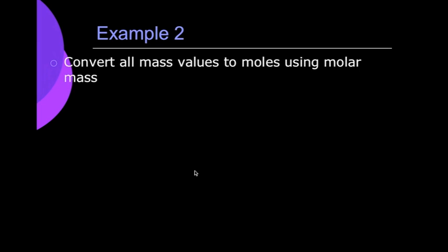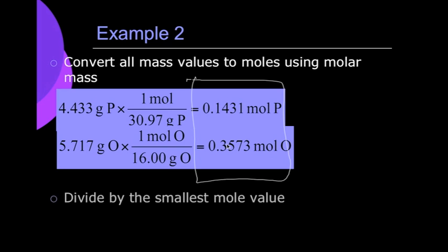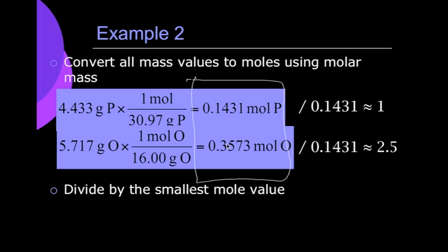So we take those guys and convert the values into moles. And we see that we would have 0.1431 and then 0.3573. And we see that the smallest number is 0.1431. So we divide both of those values by that and we get 1 and 2.5.